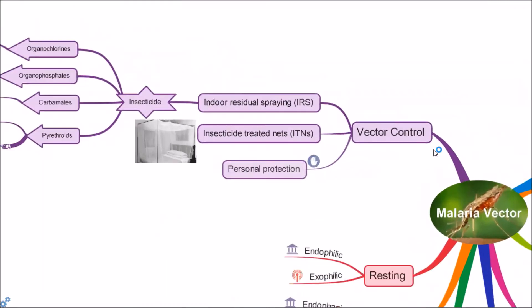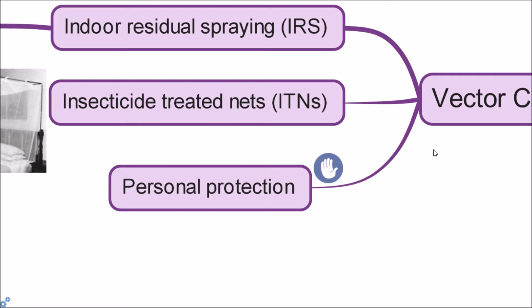Third measure is personal protection. Personal protection includes the use of window screens, wearing light-colored clothes, long pants, long-sleeved shirts, and well-constructed houses. All these measures are effective for preventing biting by mosquitoes.